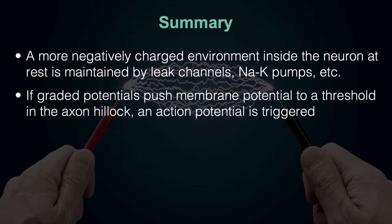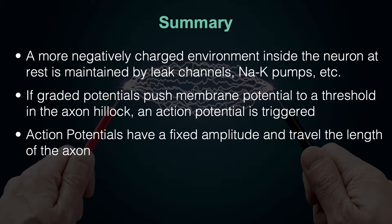We always maintain resting membrane potential with the action of leak channels and sodium-potassium pumps. From that resting state, the neuron can be influenced by any signals it receives. Those signals are graded potentials that push membrane potential up or down — up being more positive and more inclined to depolarize, down being hyperpolarized and inactivated. If it gets high enough and reaches a threshold, an action potential is triggered at the axon hillock. It has a fixed amplitude and travels the length of the axon to the synaptic end bulbs.